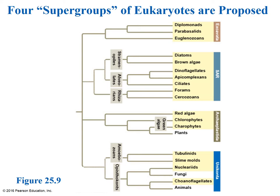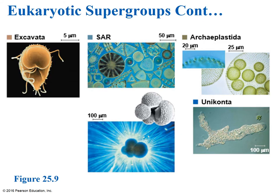The four eukaryotic supergroups are: Excavata, SAR, Archaeoplastida, and Unikonts. SAR is a little misleading as one supergroup because it is actually made up of three groups: stramenopiles, alveolates, and rhizarians. So when you count them all up, you really get six or seven groups. The first supergroup is Excavata — named for the excavated or hollowed-out appearance of one side of the cell, related to the shape of the cytoskeleton. The group includes diplomonads, parabasalids, and a large group called euglenozoans — which you'll see a lot in biological laboratories, pretty easy to culture and see under the microscope.